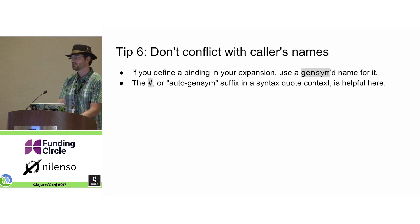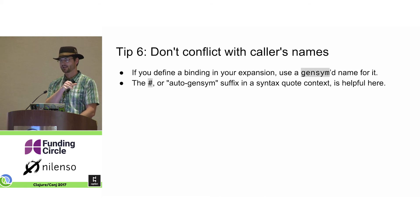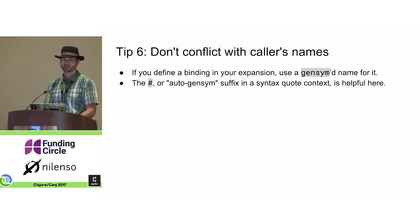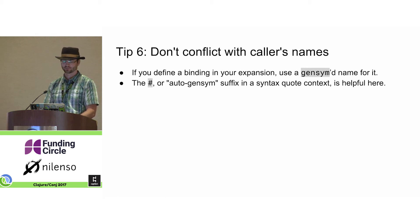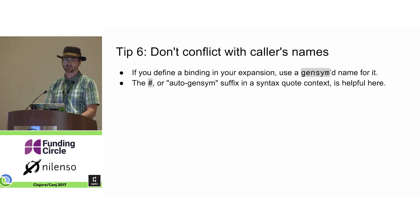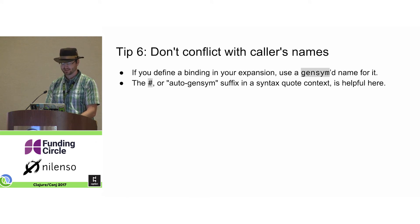Tip six: I mentioned earlier that you can know your caller's context inside of a macro, because your macro is actually expanding into code in that calling context. So it's important that you don't conflict with anything that the caller is doing — and of course anything the caller is doing is completely outside of your control. Don't use a name willy-nilly; use a gensym'd name, which is very unlikely to conflict with anything the caller is using. Inside a syntax quote context, it's convenient to use the auto-gensym suffix, which is just a hash mark.